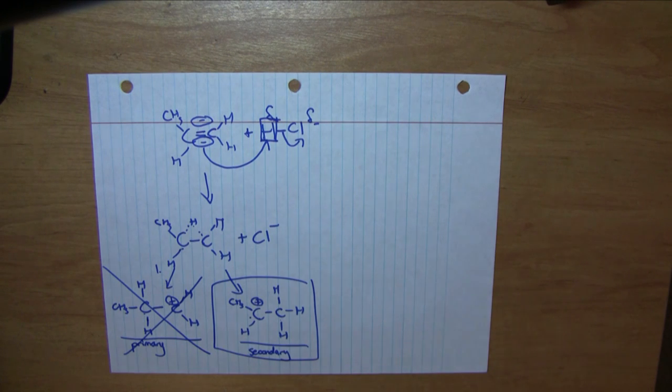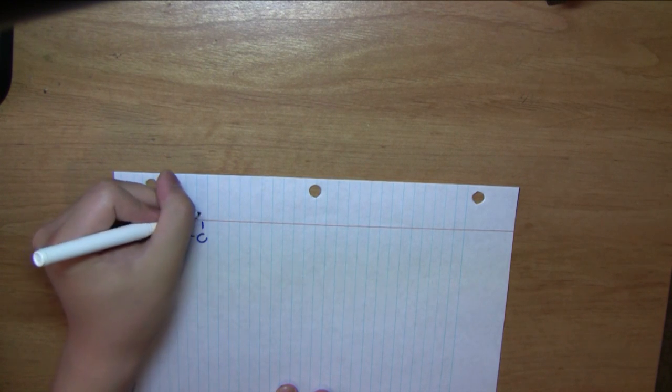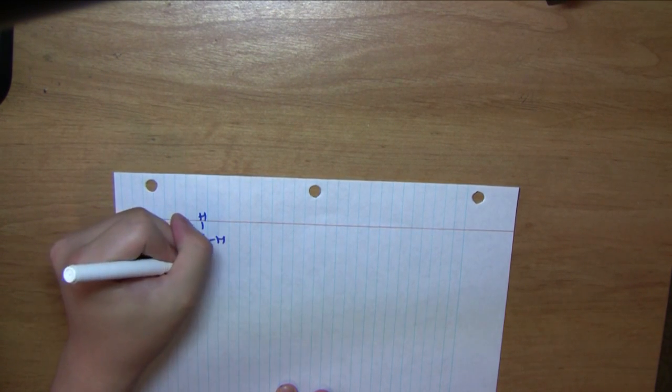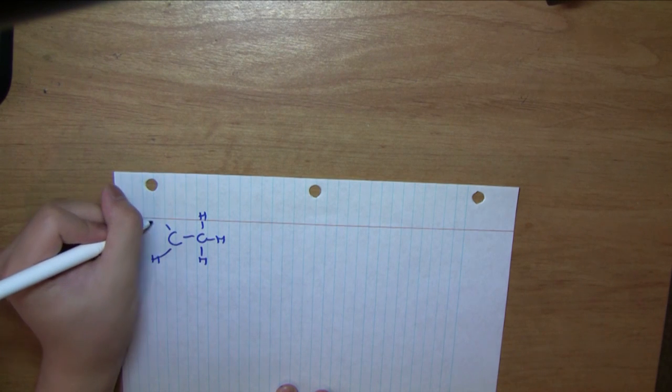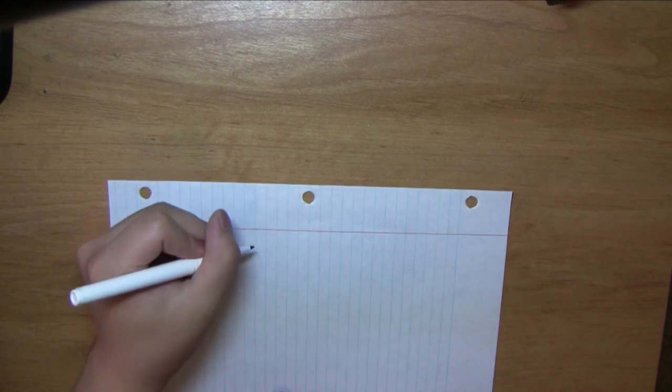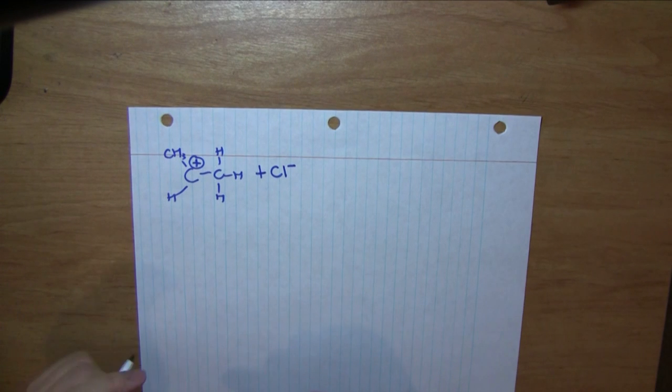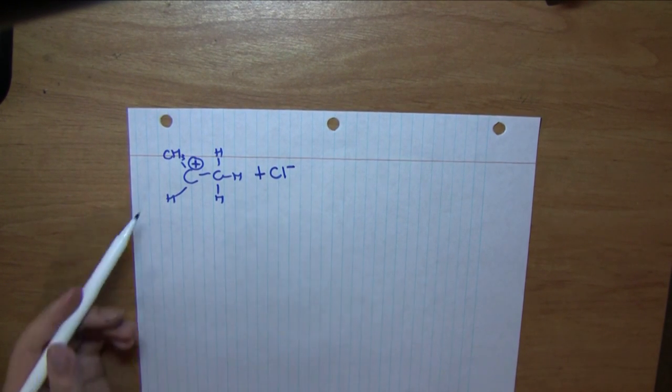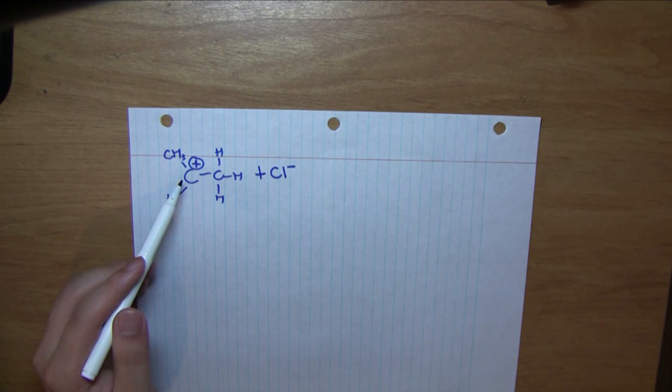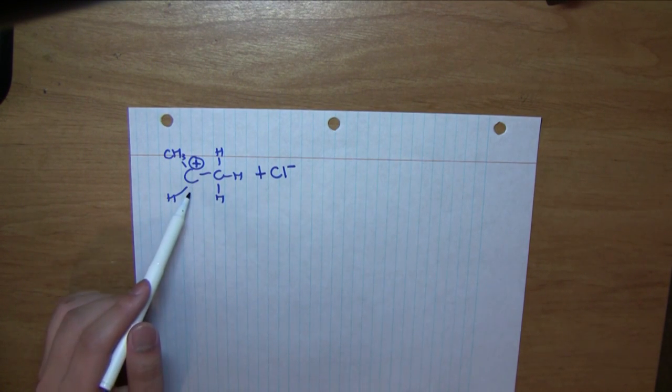Let's draw the final step in this reaction, where this intermediate reacts with the anion, the Cl-. Our intermediate from before was this, with a formal charge of plus one on this carbon. We also have the Cl- from the first step. Because it's a trigonal planar with only three things attached to it, the Cl- can either attack from the top side or the bottom side, but not both.